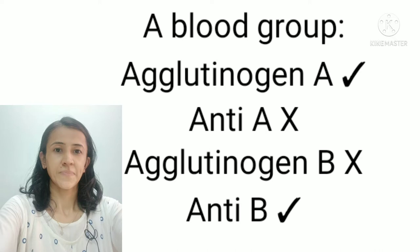According to this law, if a particular agglutinogen is present on the RBC membrane — here you can see agglutinogen A is present on the RBC membrane — then the corresponding agglutinin must be absent in the serum; anti-A must be absent. Second part of the law: if a particular agglutinogen is absent — here agglutinogen B is absent — then the corresponding agglutinin must be present in the serum.